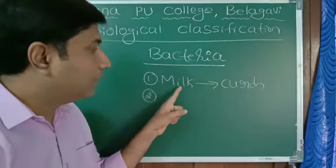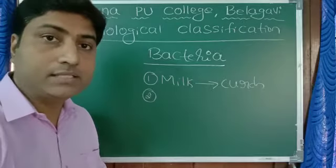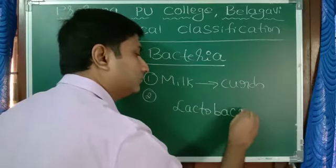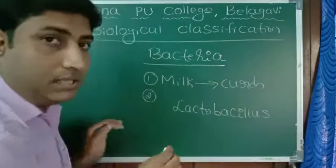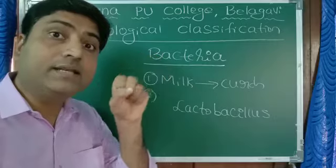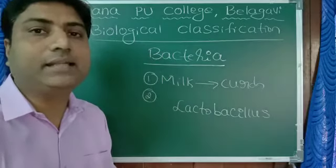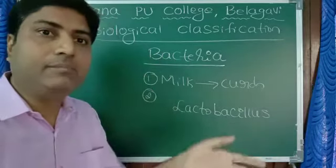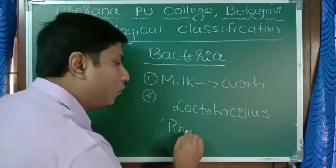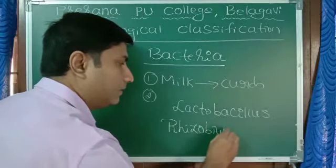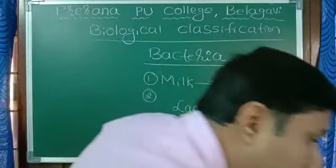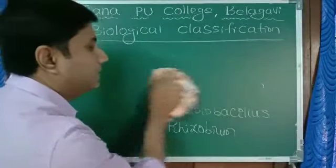So the bacteria which is helpful to convert milk into curd is Lactobacillus. There are some bacteria which live in the root nodules of some plants and they help to fix the nitrogen. One example for such kind of bacteria is Rhizobium. So Rhizobium, Lactobacillus, all these are helpful bacteria. Thus some of the bacteria help us and some of the bacteria harm us.